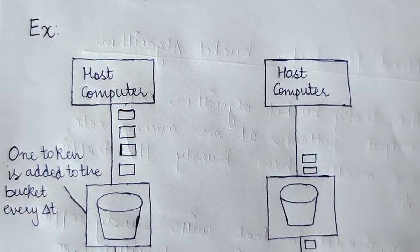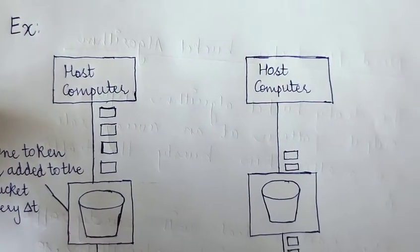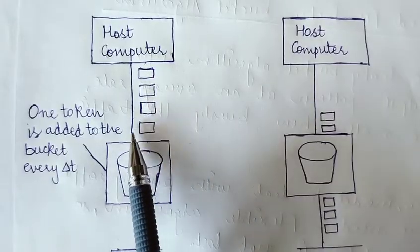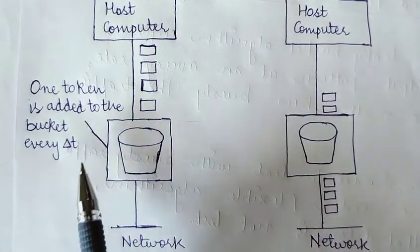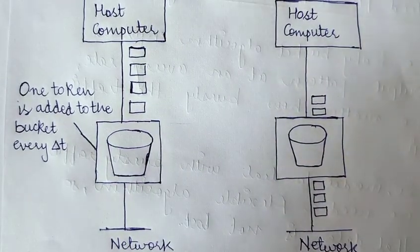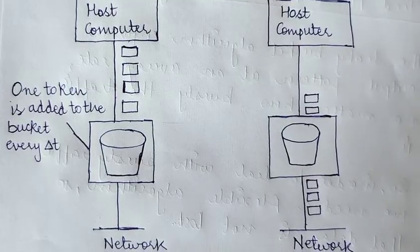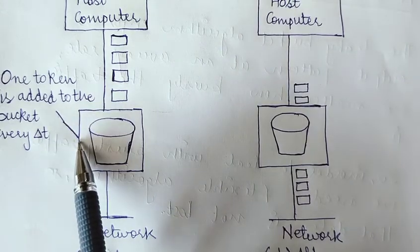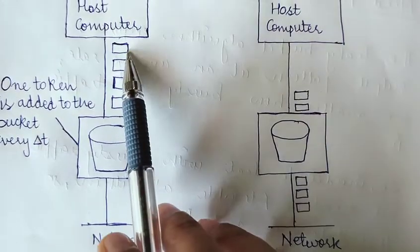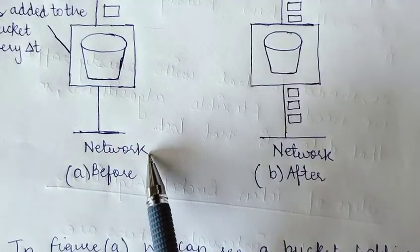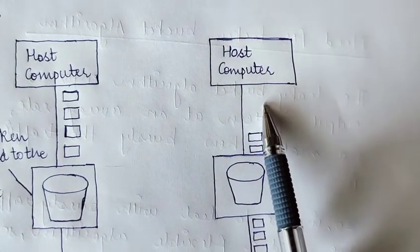Through a diagrammatic example, we can better understand the token bucket algorithm. In figure a, we have a host computer with data packets. One token is added to the bucket at every delta t time interval — not continuously, but at regular time intervals — to control the flow of data. One token is added to the bucket every delta t seconds, and data packets are being transmitted from the host computer into the network.